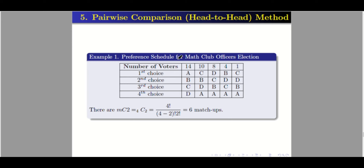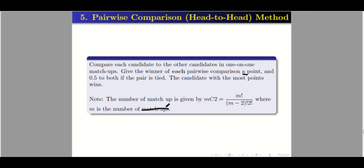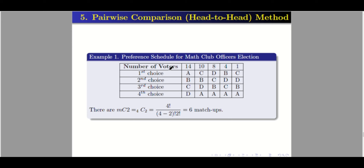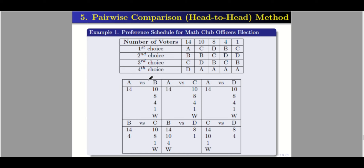Example 1: the math club officers' election preference schedule. There are 4 choices, so M equals 4. Using C(4,2), we get 6 matchups: A vs B, A vs C, A vs D, B vs C, B vs D, and C vs D.